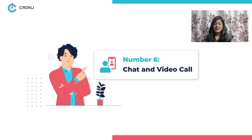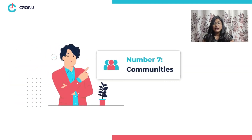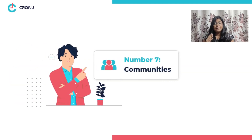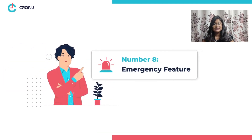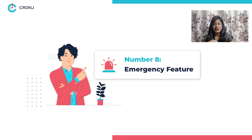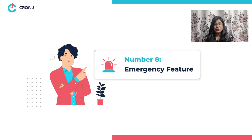Number six: chat and video calls — patients must be able to consult doctors over chat as well as video calls from the app itself. Number seven: communities — the app must provide access to mental health awareness groups to help patients boost their personal health effectively. Number eight: emergency feature — patients must be able to send emergency messages or signals during anxiety attacks, panic attacks, and other such issues to their caregivers from the app.